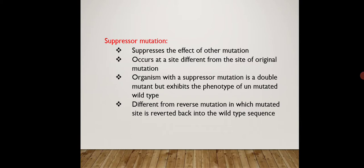Suppressor mutation suppresses, inhibits, or dominates the effect of another mutation. It occurs at a site different from the site of the original mutation — it will not take place at the original mutation site but at a different site. It will suppress the effect of either the first mutation or the second mutation. That is called the suppressor mutation.